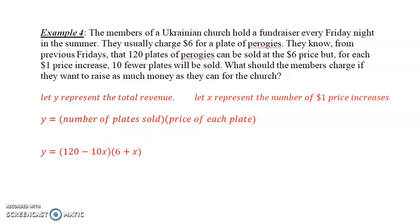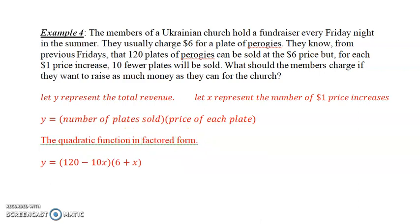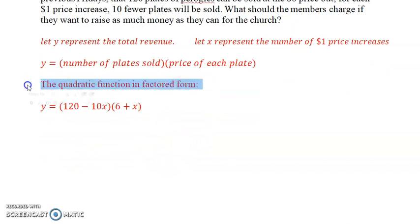We have 120 plates sold, and there will be ten fewer plates sold for every time we increase by one. The price of the plate is six dollars, and for every time we increase it by one dollar, it's going to go up. So 6 plus x. And boom, there is your quadratic equation in factored form. This is the quadratic function in factored form.